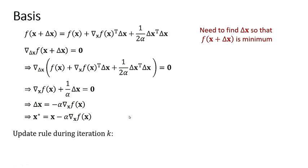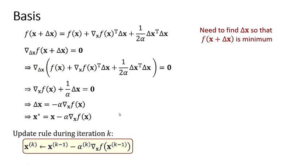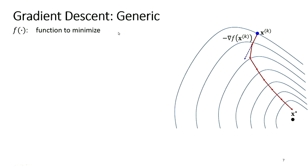This yields the update rule. During iteration K, we have from the previous iteration a value X^(K-1). We find a step size alpha_K, compute the gradient, and apply the update: X^K = X^(K-1) minus alpha_K times the gradient. X^K is not X star, so we continue — it's an iterative process until convergence.